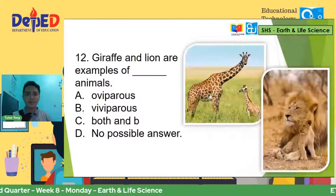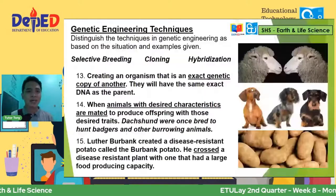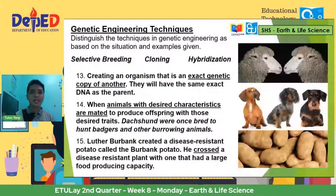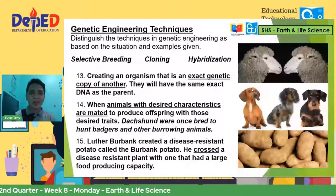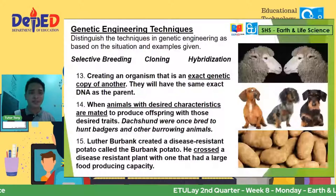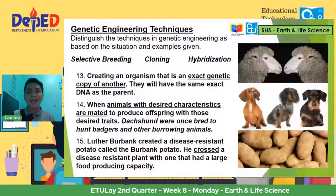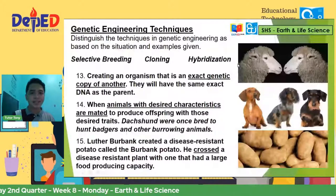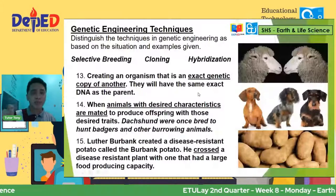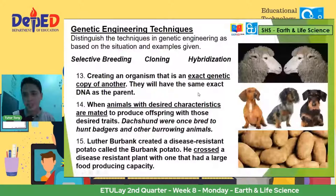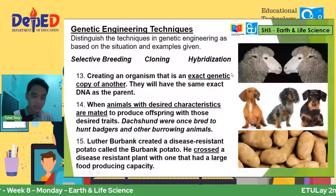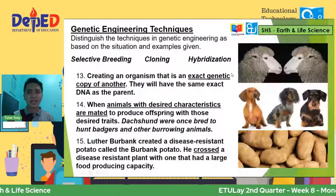Next concept is about genetic engineering techniques. I selected three basics that every senior high school learner should know: selective breeding, cloning, and hybridization. Kapag nag-answer tayo ng identification, look for clue words — or minsan mismo dun sa diagram, you can get clues. Good afternoon sa mga ka-tune in lang. We are now on week eight of Earth and Life Science with me, your tutor for this session, Teacher Tony.